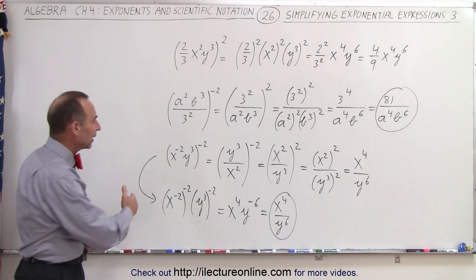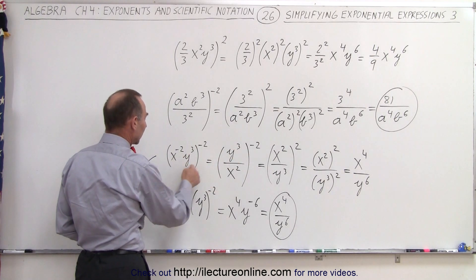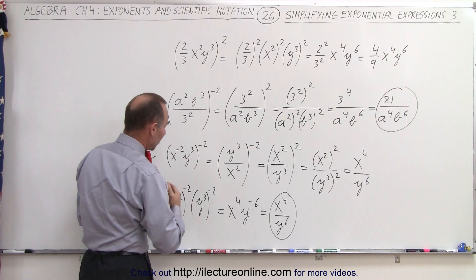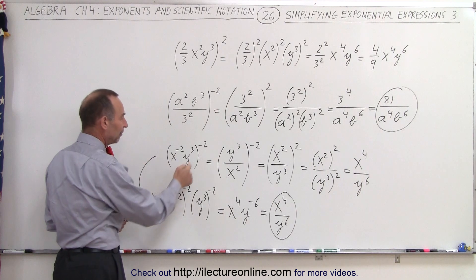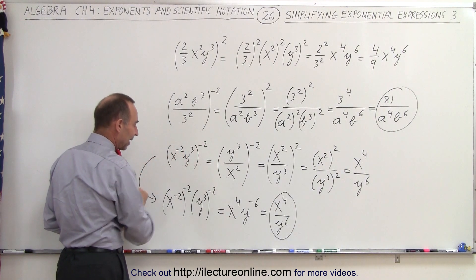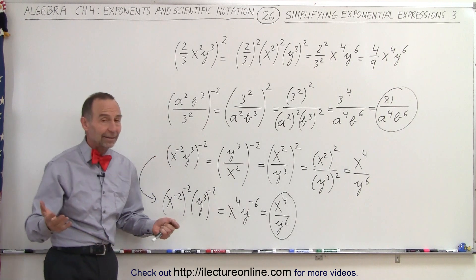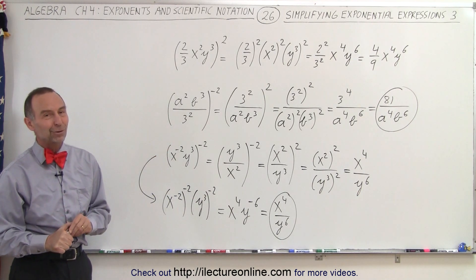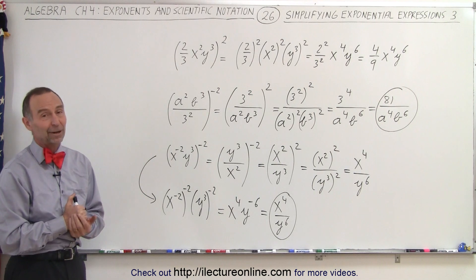I like the idea of getting rid of negative exponents first, working inside the parentheses and then outside. But you don't have to do that — you can simply apply the exponent to everything inside directly, multiply, and get the exact same result. It comes down to what method you prefer, but that is how it's done.